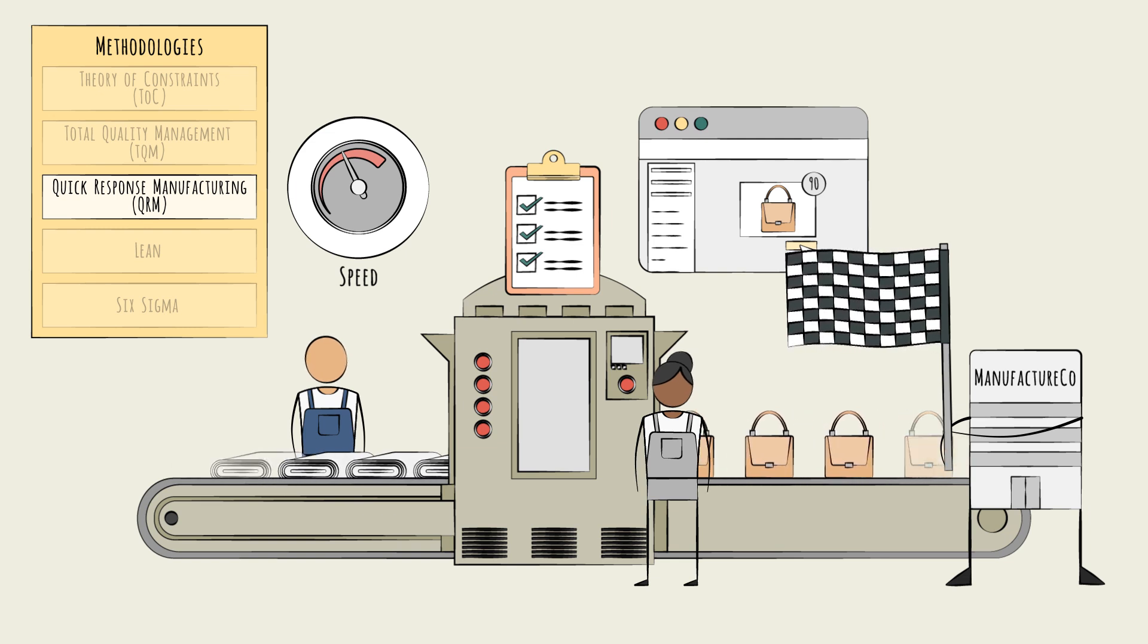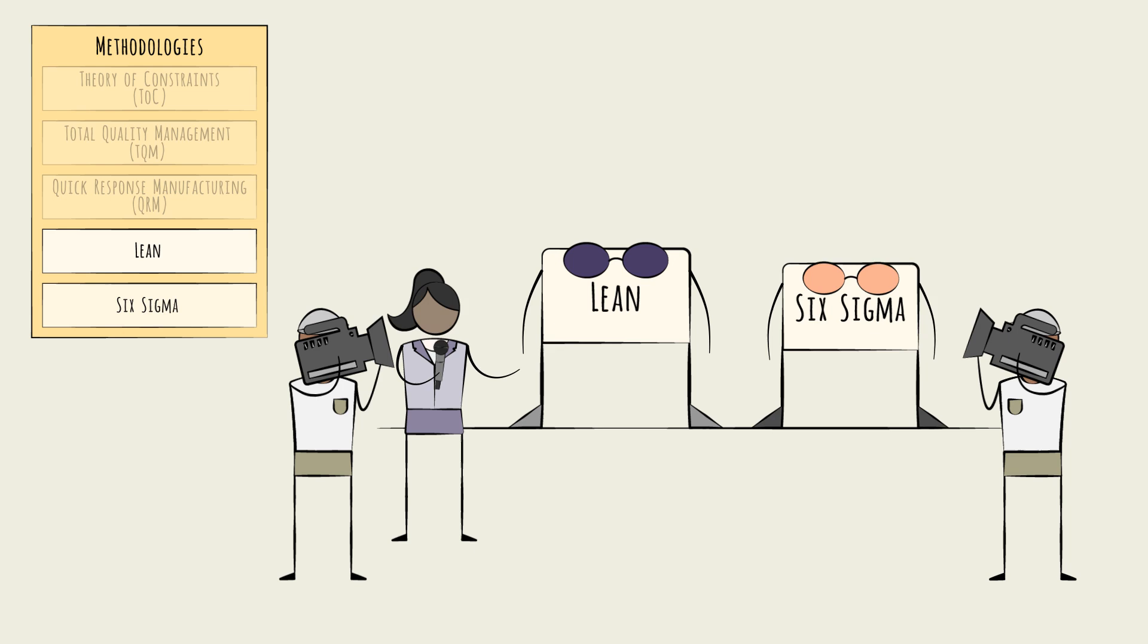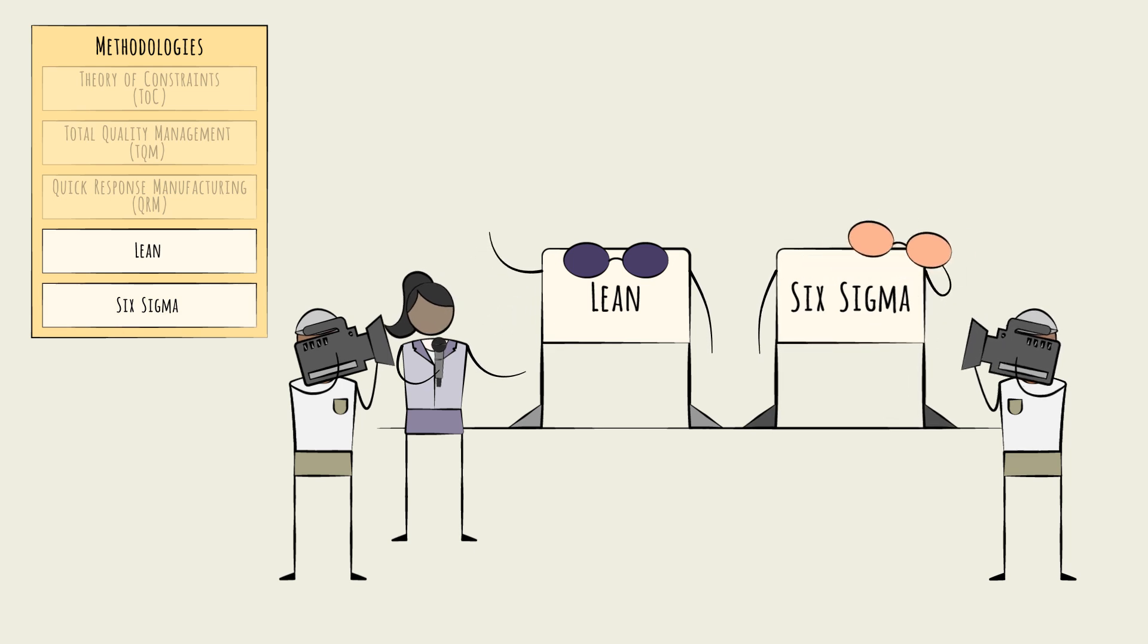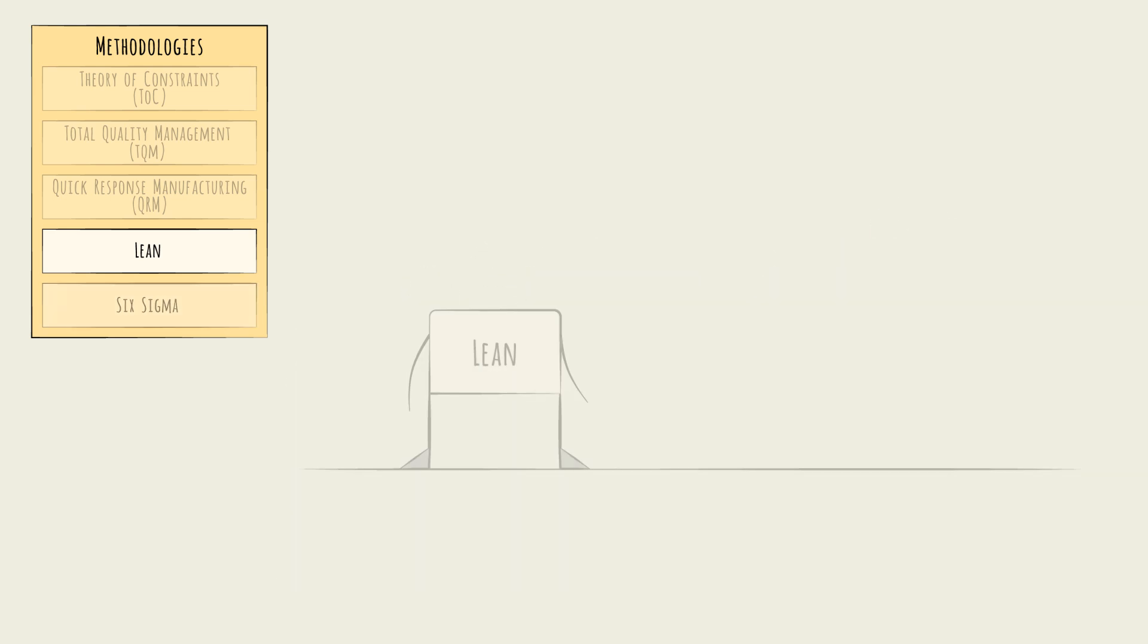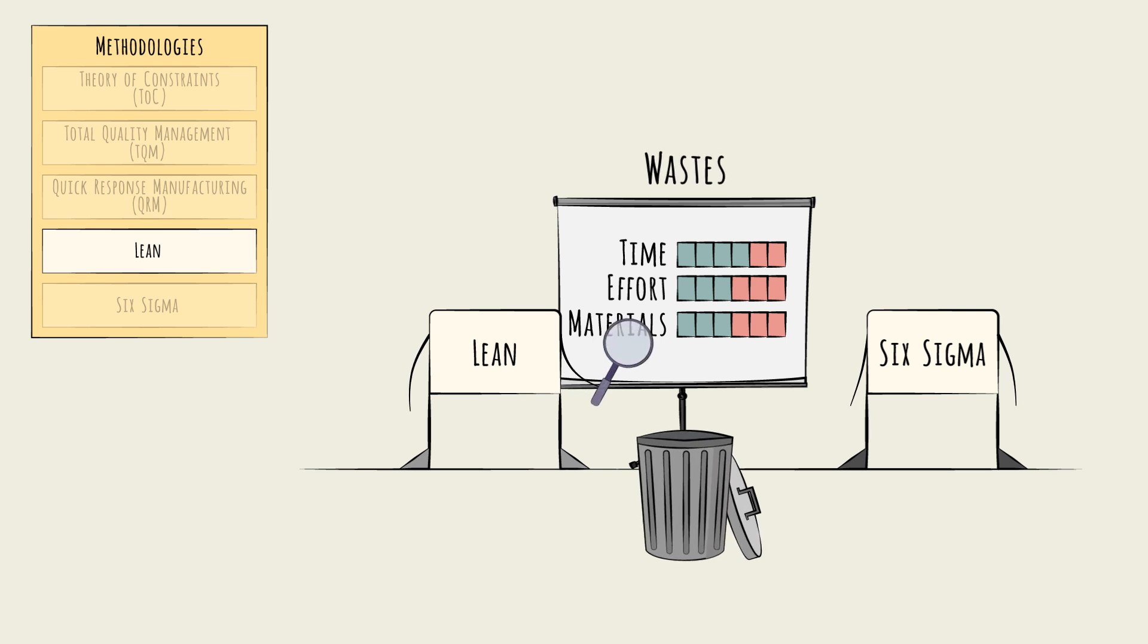But no school is as famous or common as Lean, or Six Sigma, which share many underlying principles. Lean focuses primarily on reducing waste in a workflow. Waste is broadly defined. Time, effort, materials, these can all be waste.